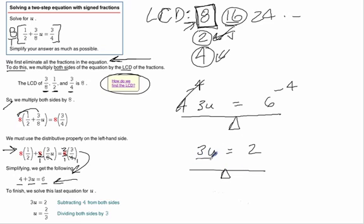And we know that we need to divide by 3 on both sides to get the u all by itself. And that's what they've done here. So u is going to equal 2/3. And there's our answer.